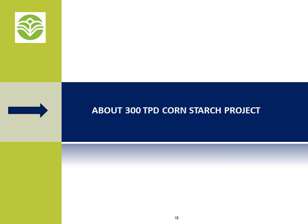Now I am going to give you some detailed information regarding a 300 tons per day corn starch processing system that you might be interested in. This includes general information regarding required energy, land and building, as well as products and by-products yields.